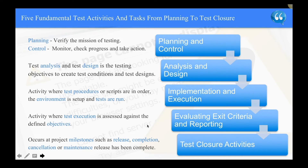These are the five fundamental test activities and tasks from planning to test closure. First: planning and control — planning verifies the mission of testing; control monitors progress and takes action. Second: analysis and design — test analysis and design converts testing objectives into test conditions and test designs. Third: implementation and execution — test procedures or scripts are ordered, the environment is set up, and tests are run. Fourth: evaluation, exit criteria and reporting — test execution is assessed against defined objectives. Fifth: test closure activities — occurs at project milestones such as release, completion, cancellation, or when a maintenance release has been completed.